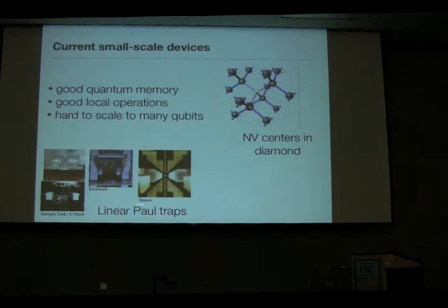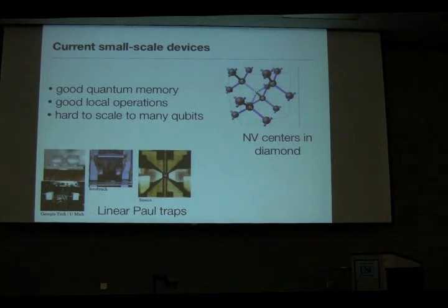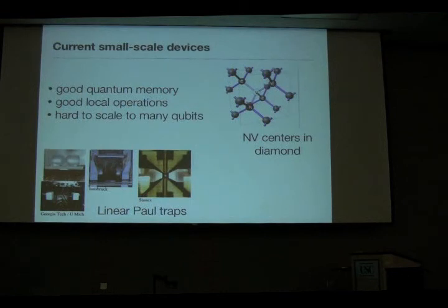One system is the so-called linear Paul trap systems. Paul trap systems throughout the world are trying to couple efficiently to photons, with cavities along with the Paul trap. These are ion trapping systems where I can't scale the size very much because I have only a single trapping zone. But the technology is extremely mature, making it easy to do good local operations and to demonstrate extremely good quantum memories.